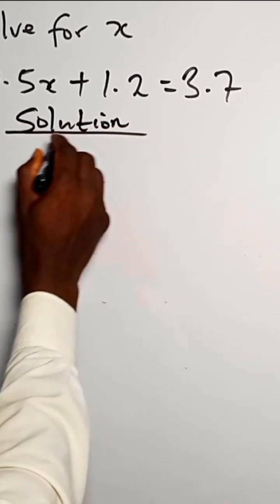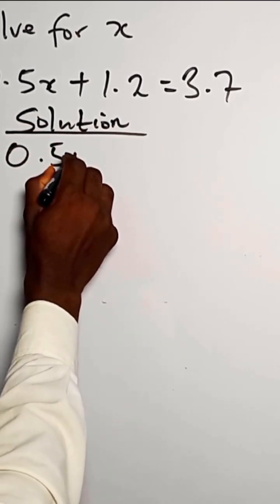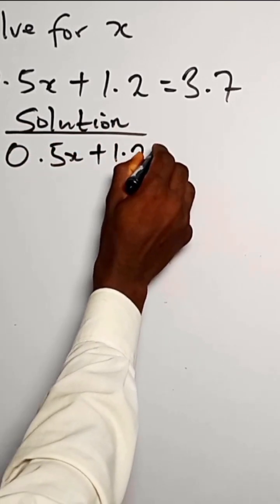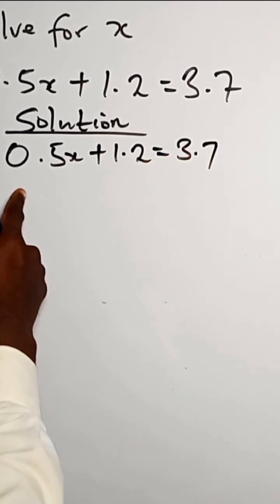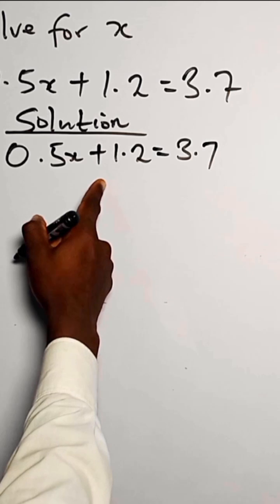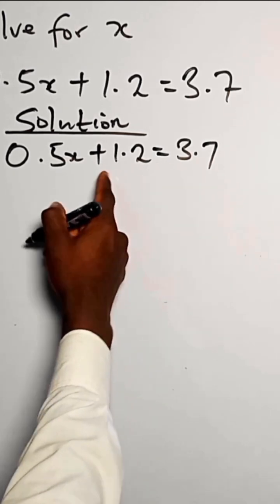So for 0.5x plus 1.2 equals 3.7, what do we do from here? We subtract 1.2 from both sides.